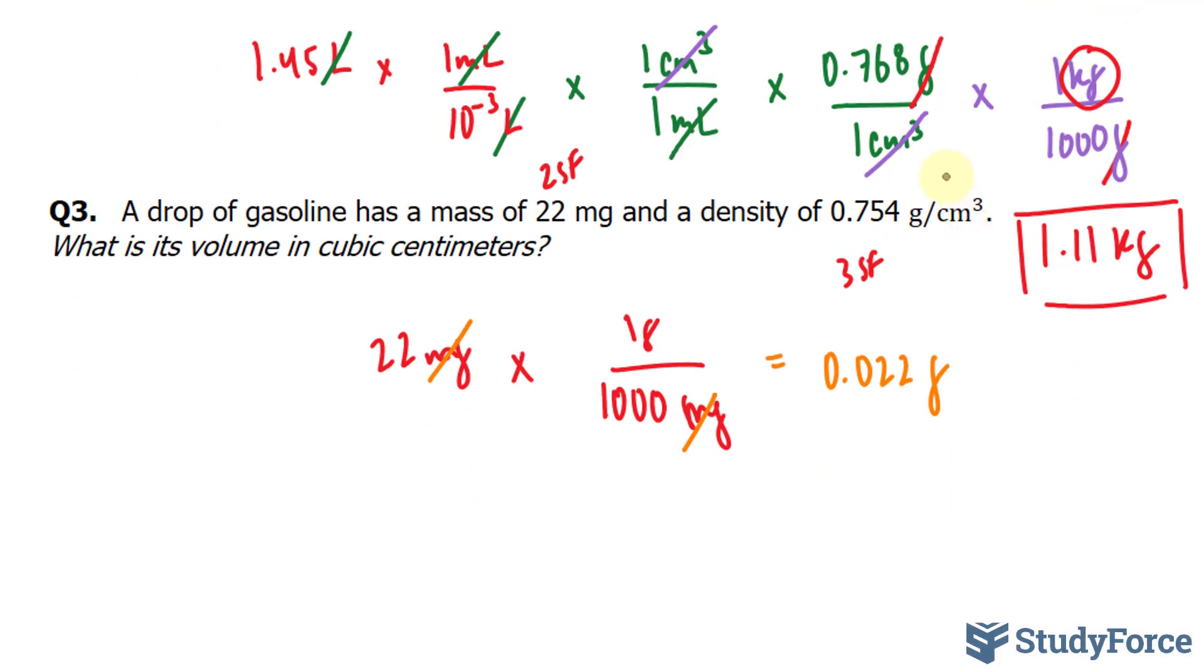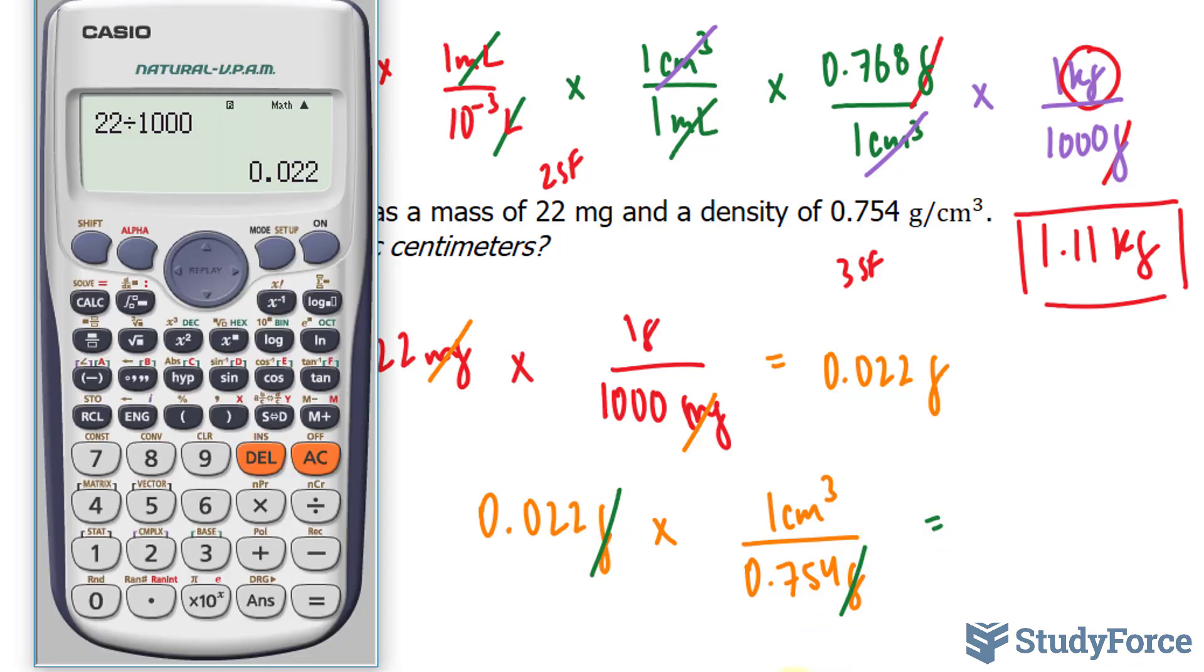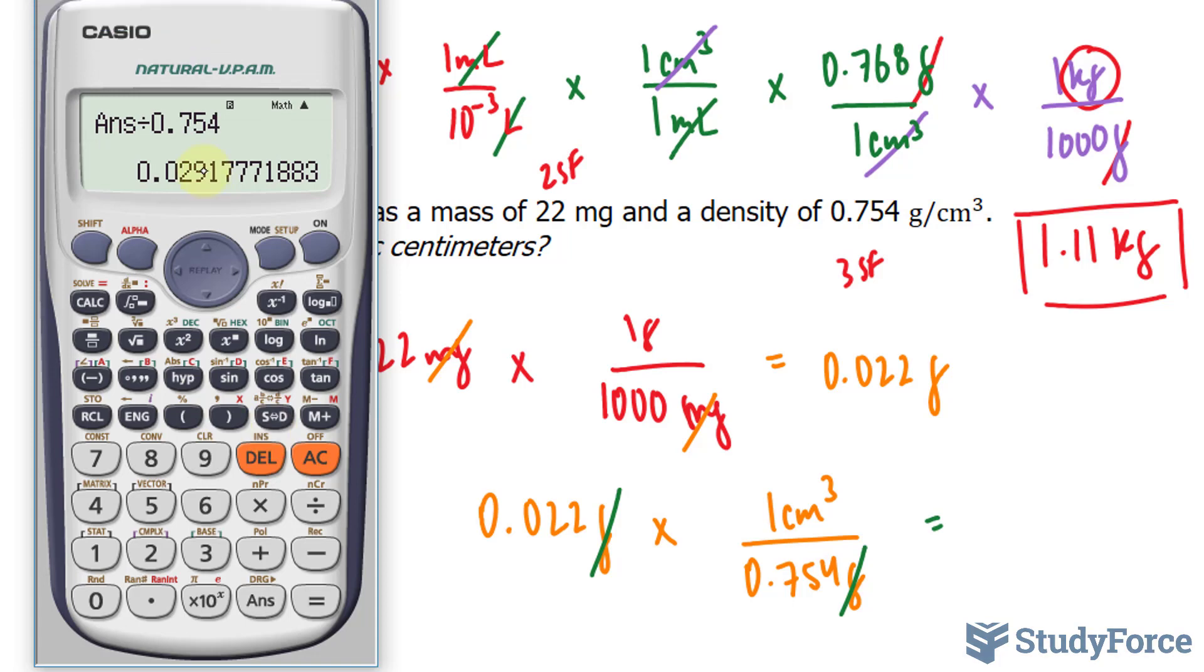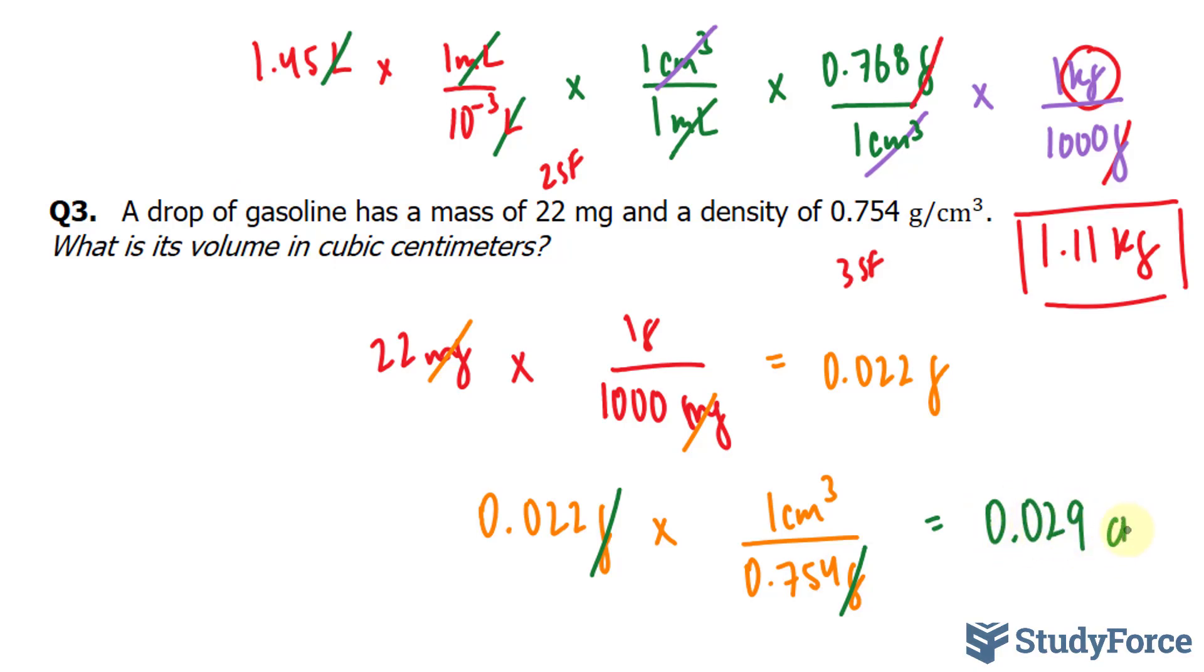Now, I'll take this number and multiply it to the density. So I have 0.022 grams times, and instead of putting 0.754 at the top like we did in questions 1 and 2, I'll put it at the bottom: 0.754 grams and 1 centimeter cubed at the top. You can do that. You can do that with every conversion factor, not just density. The grams cancel out, and I'm left with this number divided by 0.754. This gives me an answer of 0.029. Remember, you only need two significant figures, so anything after this 9 is insignificant. Our final answer is 0.029 centimeters cubed.